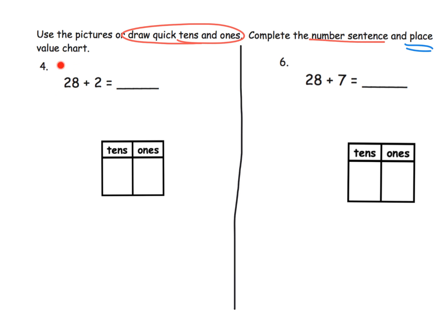Parents and teachers, you're going to see this. We're going to start by modeling that 28. So 28, we'll start with a quick 10, another quick 10, and then 8. So that's going to be one, two, three, four, five, six, seven, eight.